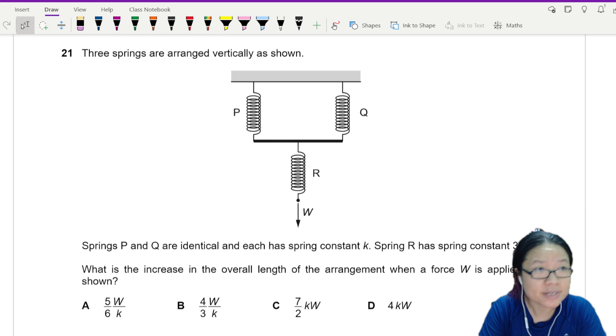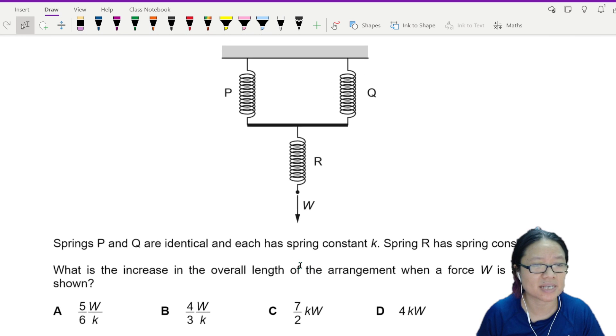Here we have three springs, and they are arranged vertically as shown. Springs P and Q are identical and each has spring constant K.